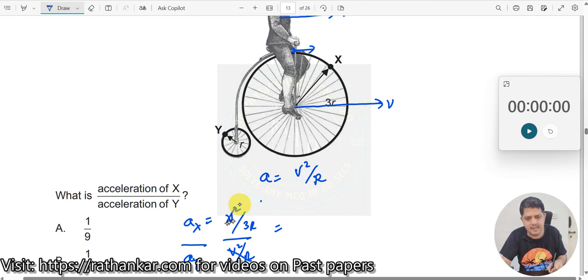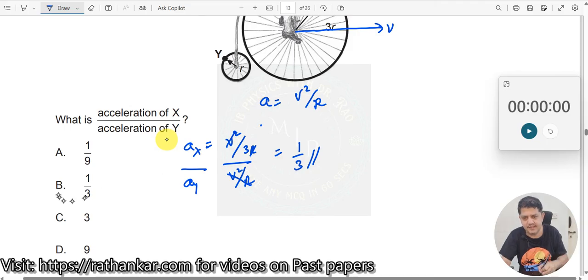When I do this, what will happen? V squared by R. V squared by R goes away. So, the answer should be 1 by 3 over here. Okay. So, answer is B.